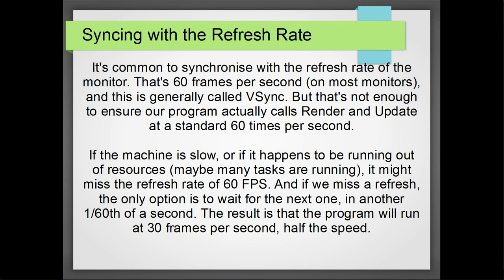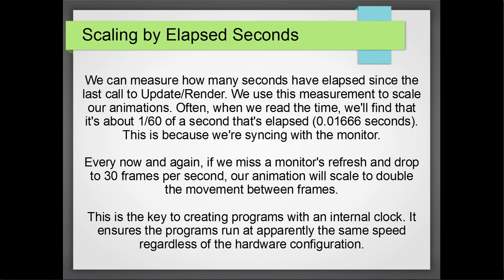We're going to have to do a little bit more than just sync with the refresh rate, but we will be syncing with the refresh rate automatically. What we really want to do is scale by the elapsed seconds — measure how many seconds have elapsed since calls to update and render. In our game loop we're calling update and render over and over again. What we'll read is going to be about 1/60th of a second, or 0.016666 repeating, because we're syncing with the monitor refreshing 60 times a second.